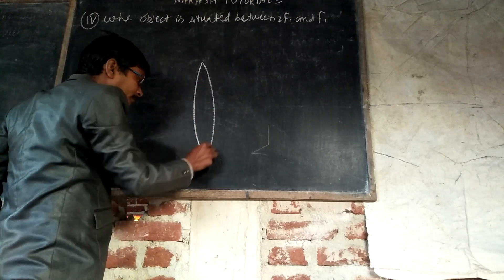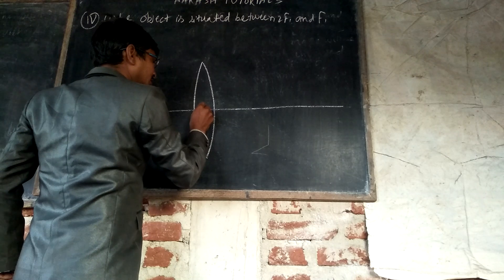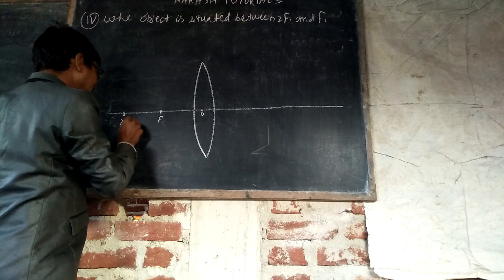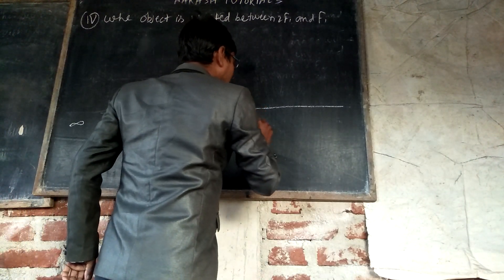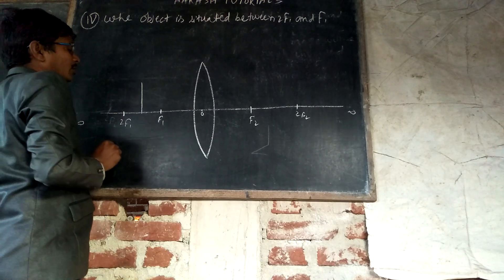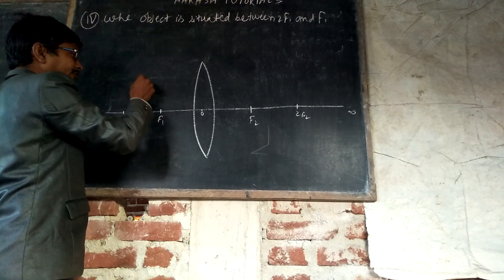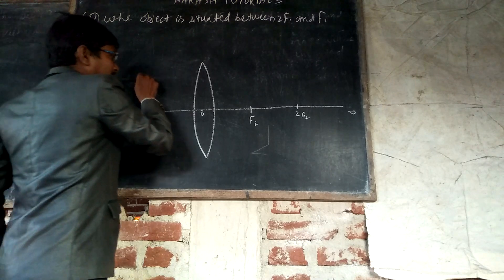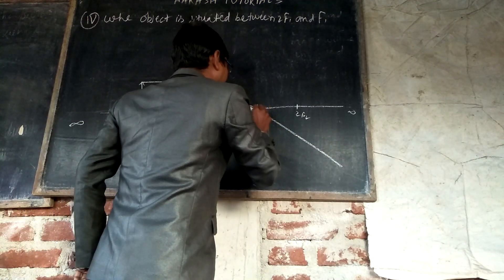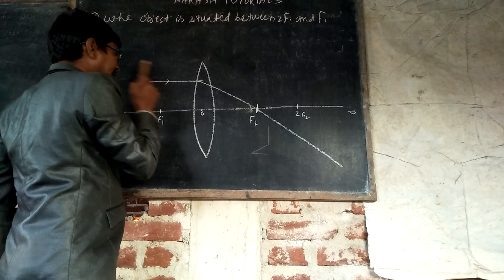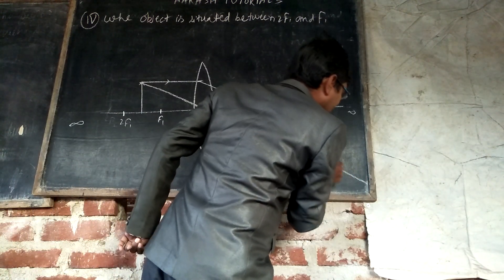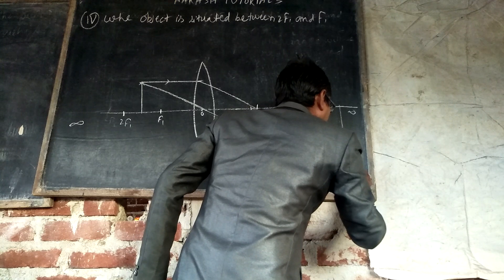Let us draw the diagram. This is a convex lens with principal axis, optic center O, and positions F₁, 2F₁, F₂, 2F₂, and infinity marked. When the object is situated between 2F₁ and F₁, one ray is parallel to the principal axis which passes through F₂, and another ray passes through optic center O.